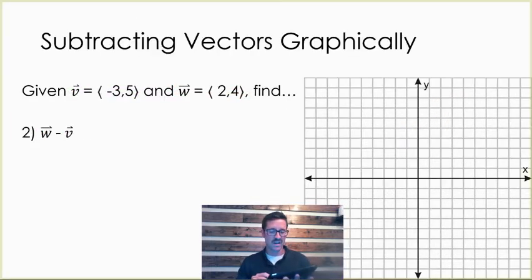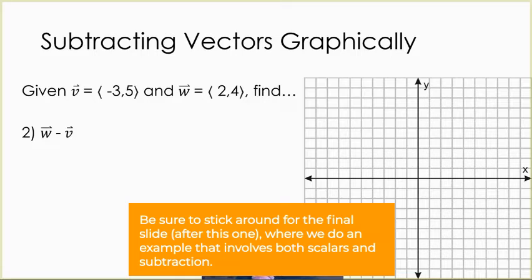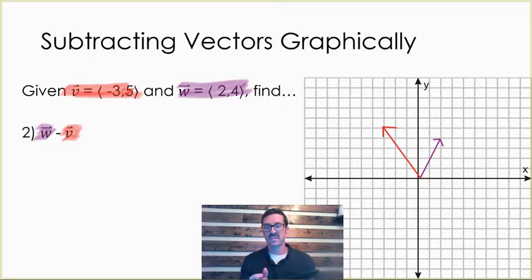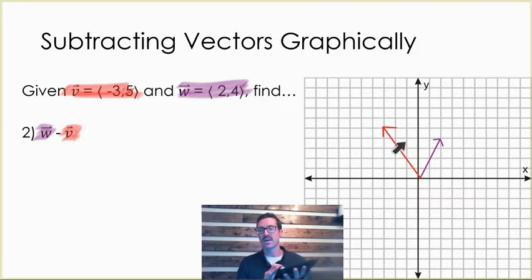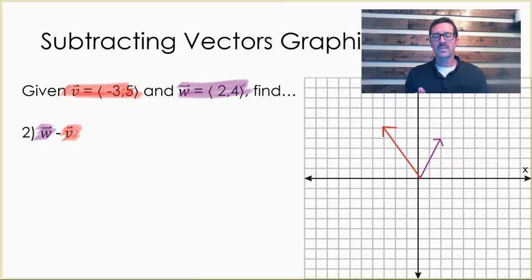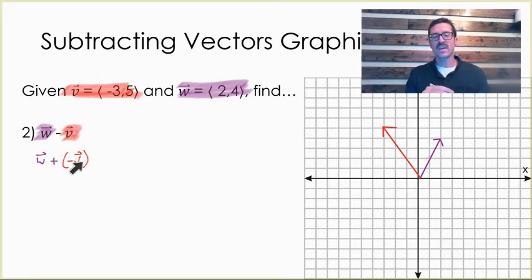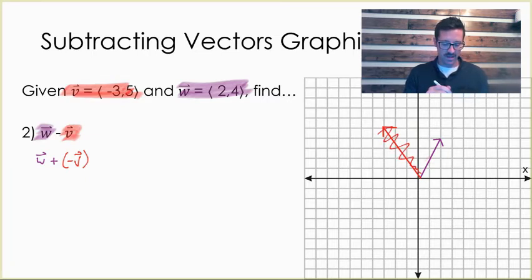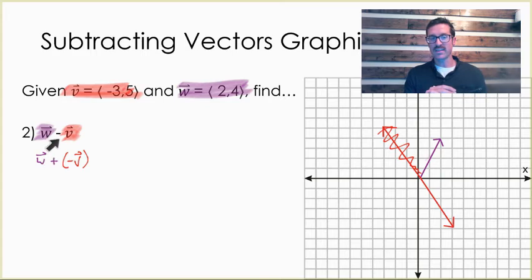Let's look at how to subtract vectors graphically. I'm going to start with vector W — I'll do that one in purple — and then I've got vector V which is negative 3, 5. We're doing W minus V. With subtraction, the order matters; with addition, the order doesn't really matter. The best way to think about this is that when we're subtracting, we're really adding a negative — so we're really doing vector W plus the opposite of vector V. If you multiply vector V by a scalar of negative 1, all that does is reflect it: instead of going to the left 3 and up 5, it goes to the right 3 and down 5. So subtracting is just adding a negative.